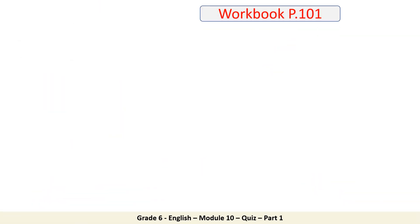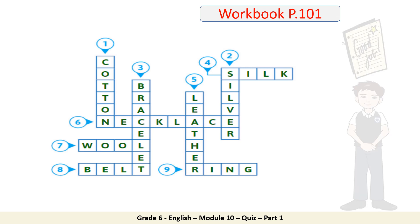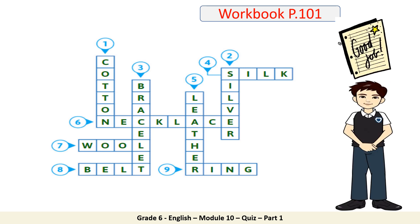Let's check the crossword answers. Number one: cotton. Number two: silver. Three: bracelet. Four: silk. Five: leather. Six: necklace. Seven: wool. Eight: belt. And finally number nine: ring. Awesome job, everyone.